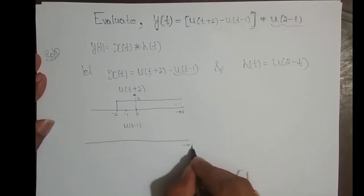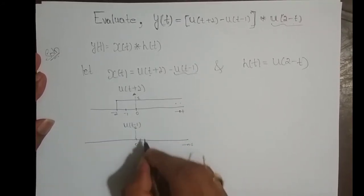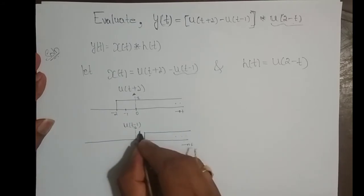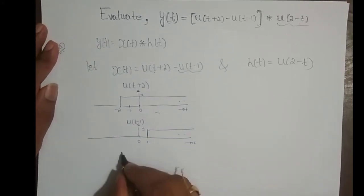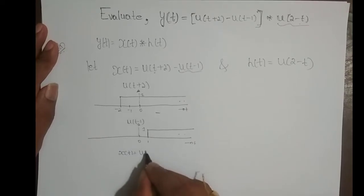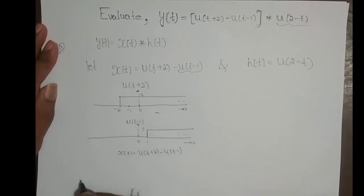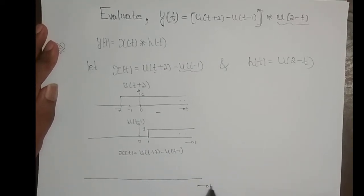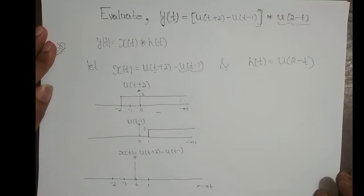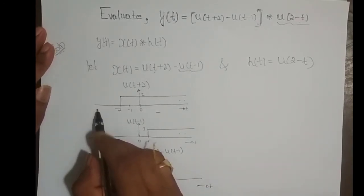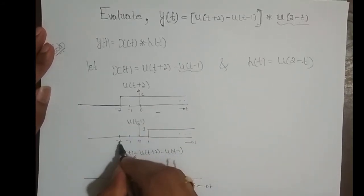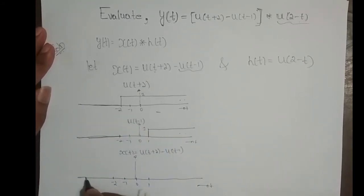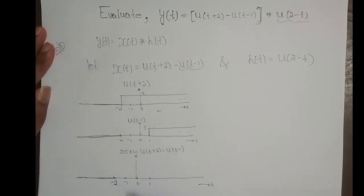How does u(t-1) look? It is u(t) shifted right one time, so it starts at t = 1, with amplitude 1. Now, subtracting: for t from -∞ to -2, both signals are 0, so 0 - 0 = 0. For t from -2 to 1, the first signal is 1 and the second is 0, so we get 1.